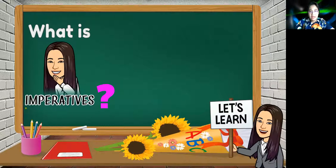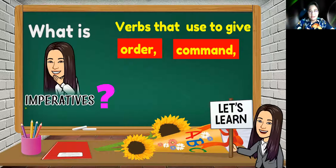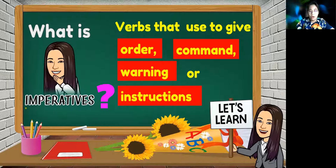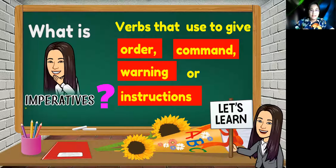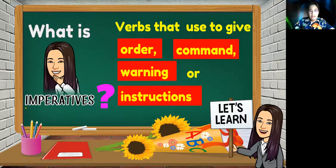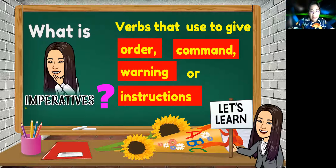What are imperatives? Imperatives are verbs used to give order, command, warning, or instructions. Let me explain in Bahasa Melayu. Imperatives adalah verbs — kata kerja yang menggunakan order, iaitu arahan. Command — arahan. Warning — amaran. Atau instructions — arahan. Semua ini membawa maksud yang sama: kata kerja yang memberikan arahan untuk melakukan sesuatu ataupun amaran.